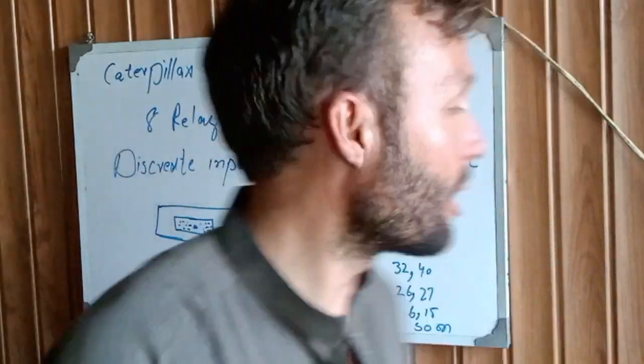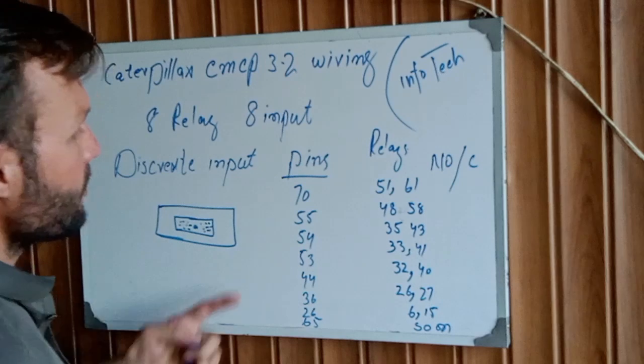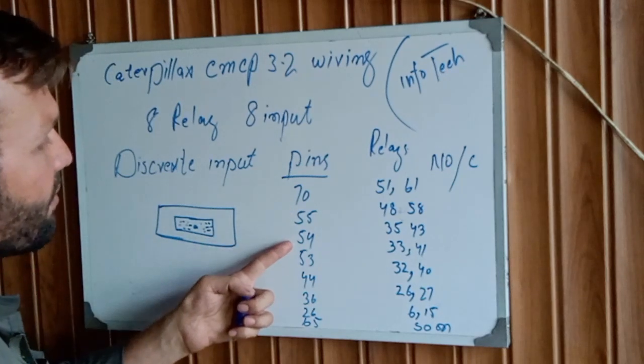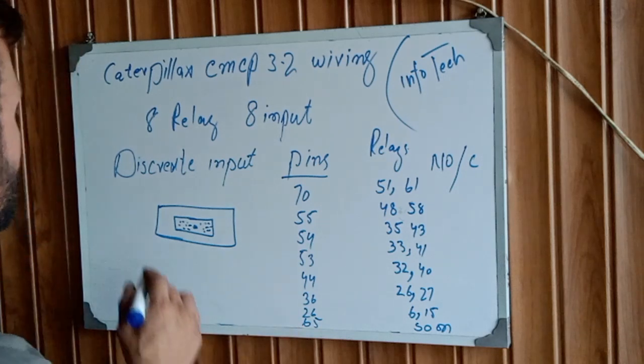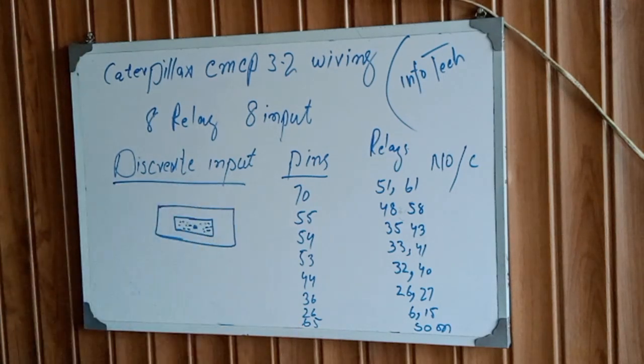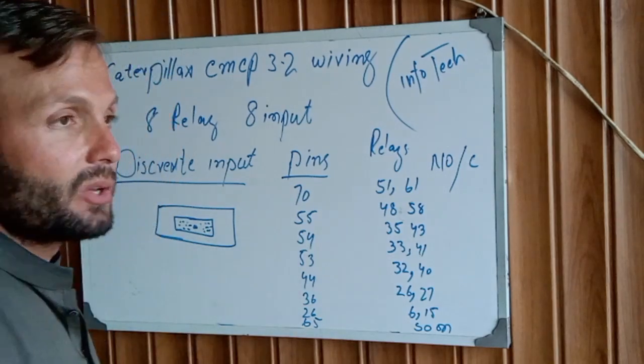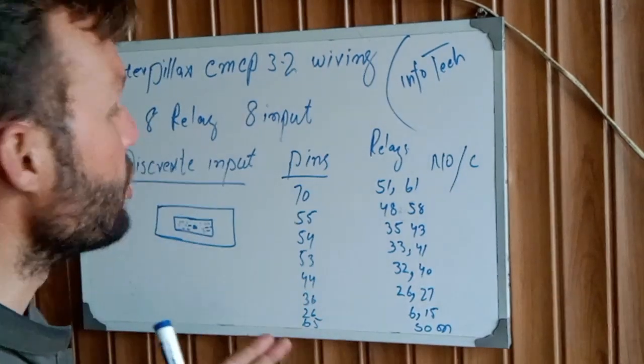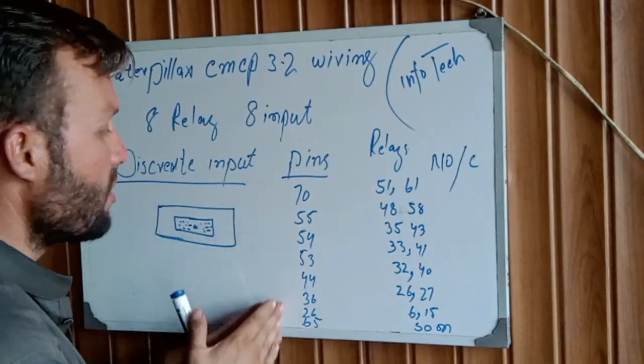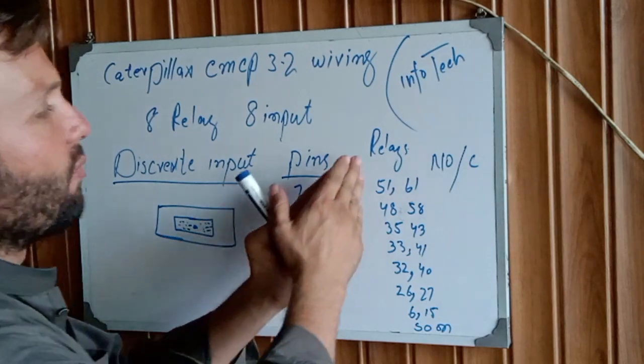You know that these are our pins: 70, 55, 54, 53, 44, 36, 26, 65. This is our discrete input. What's the meaning of discrete input? That means you provide your supply to these contacts for relays.